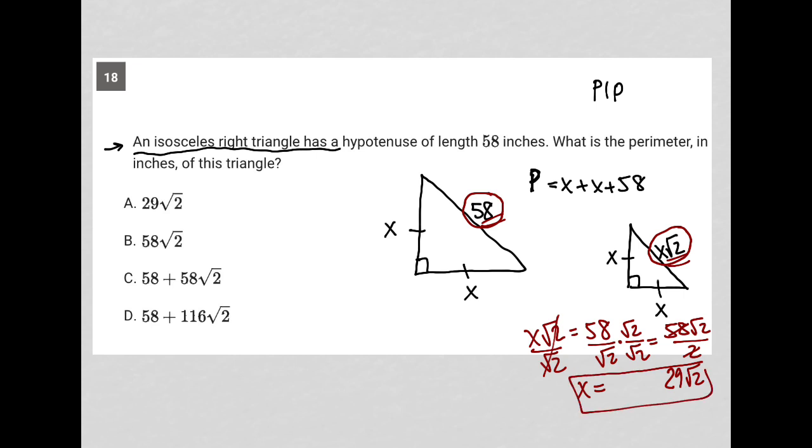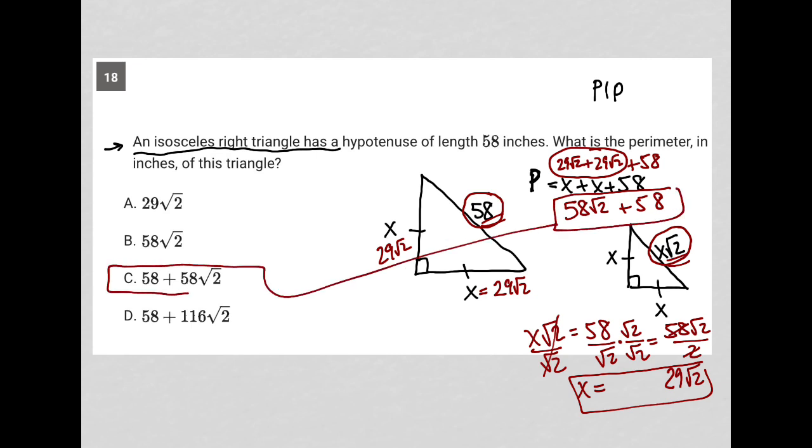So back to the triangle that I drew for the question, that means that these two sides are equal to 29 root 2. So the perimeter is just going to be 29 root 2 plus 29 root 2 plus 58. 29 root 2 plus 29 root 2 is 58 root 2, and then plus 58. So there's my answer for the perimeter. And therefore, choice C must be correct.